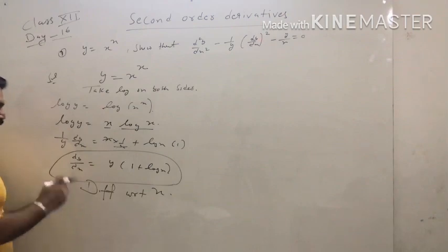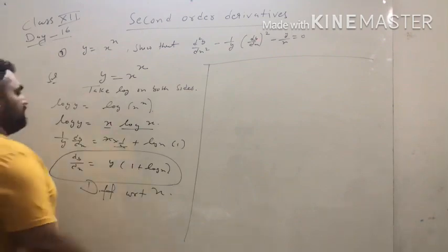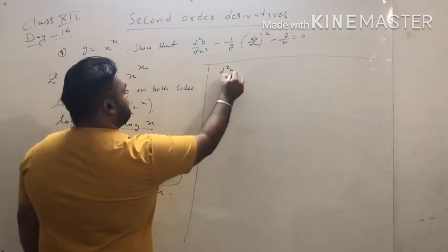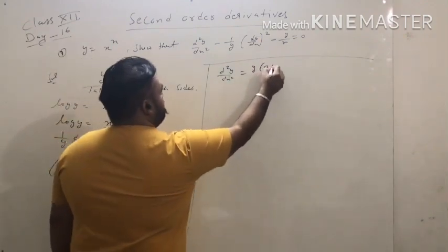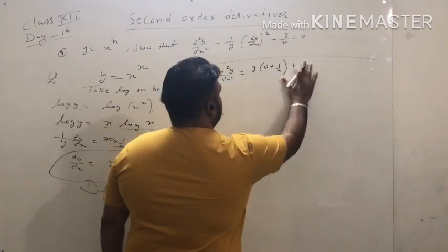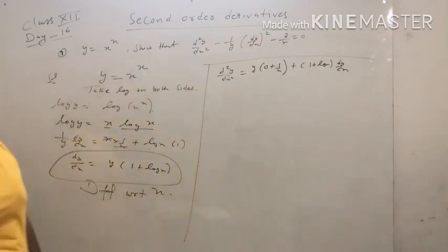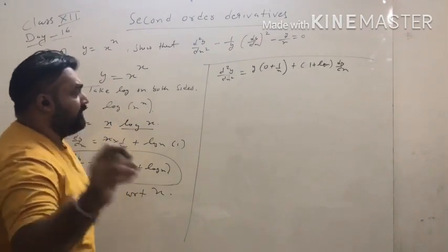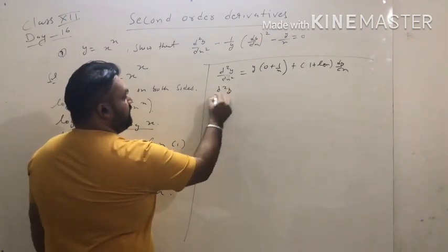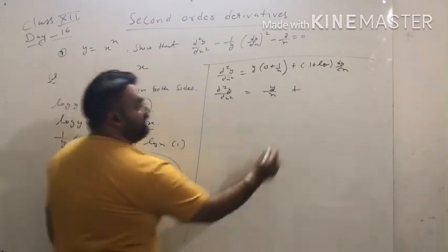Now differentiate: (1/y)·(dy/dx) = derivative of x·log x. Two terms — use product rule: first term same times derivative of second plus second term times derivative of first. So (1/y)·(dy/dx) = x·(1/x) + log x·1 = 1 + log x. Therefore dy/dx = y(1 + log x).